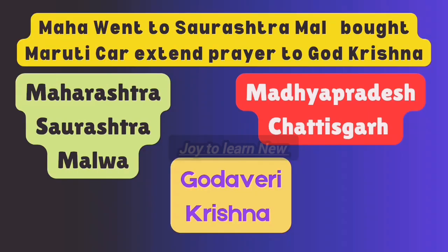The next shortcut is: 'Maha went to Saurashtra Mall, bought Martikar and extended prayer to God Krishna.' Maha means Maharashtra, Saurashtra represents Saurashtra, Mall represents Malwa. Martikar: M.A. represents Madhya Pradesh, Kar represents Chhattisgarh. Then 'extend' — it extends up to Godavari; God represents Godavari, and Krishna represents the Krishna river. Black Soil covers all these regions.